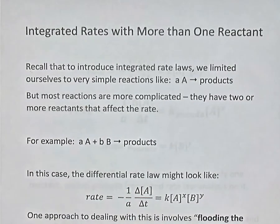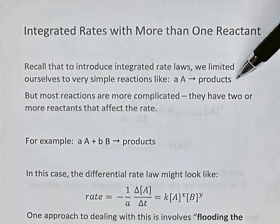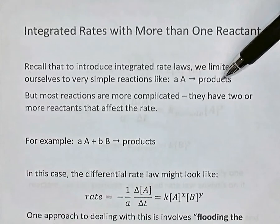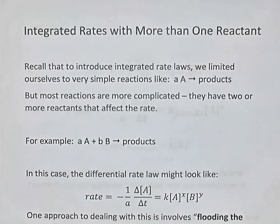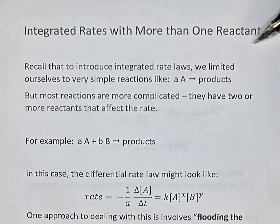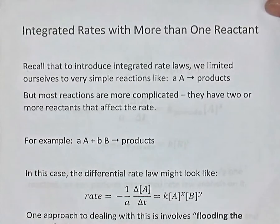In this second video on integrated rate laws, we'll look at how to deal with reactions where there's more than one reactant. When we introduced integrated rate laws earlier, we were only looking at simple decomposition reactions with one reactant. If you have only one reactant, analyzing its rate law by the integrated rates method is very simple — you just graph concentration of A versus time, natural log of concentration versus time, and reciprocal of concentration versus time. But most reactions are more complicated, with two or more reactants affecting the rate.